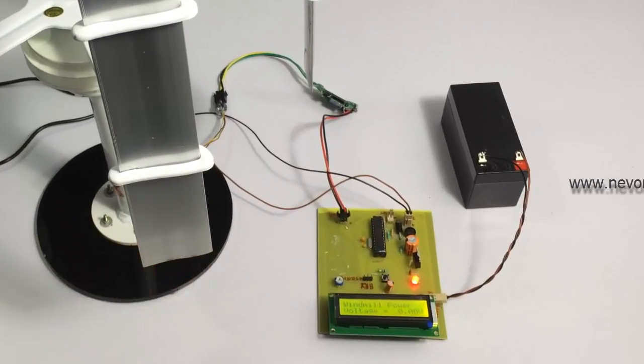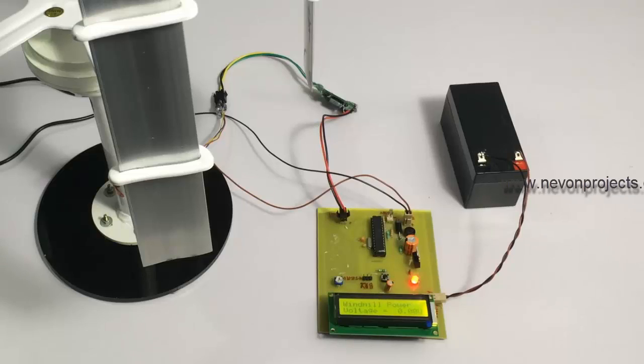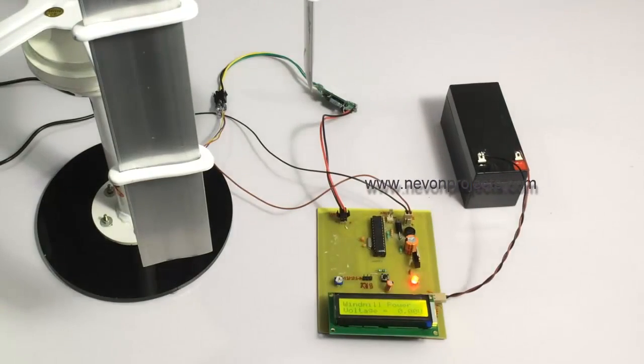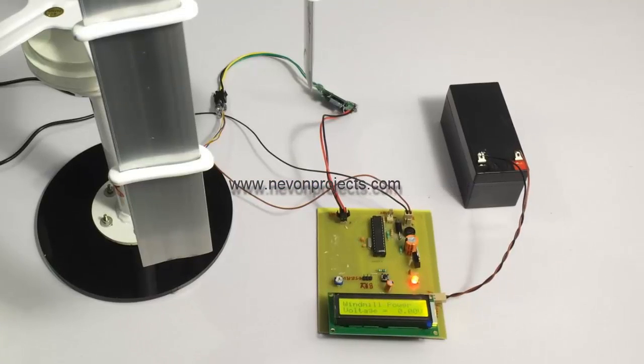We have a circuit here which is used to get the voltage and display the voltage generated by the windmill. Then it charges the battery using the power generated.